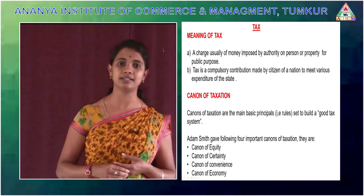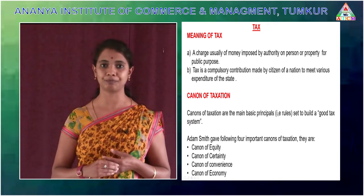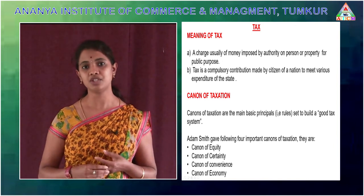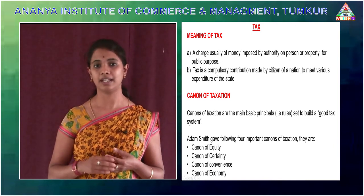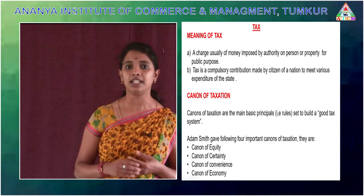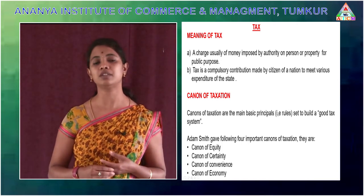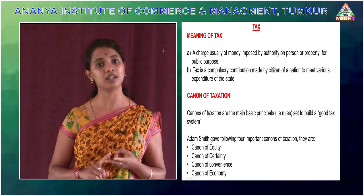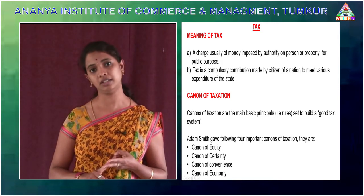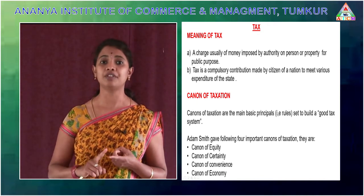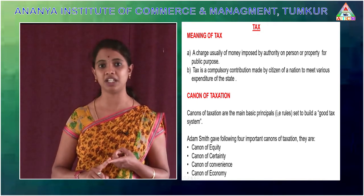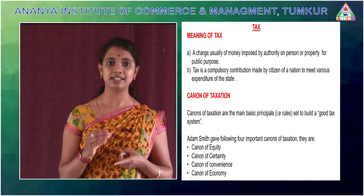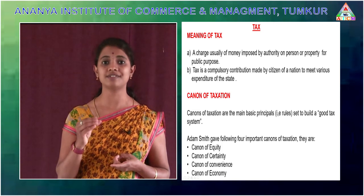The next canon is the canon of certainty. The tax that an individual pays should be certain and not arbitrary. It means the taxpayer should know in advance how much tax he has to pay, at what time he has to pay it, and in what form he has to pay the tax to the government. This is the concept of canon of certainty.